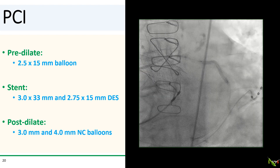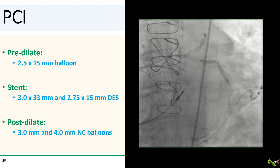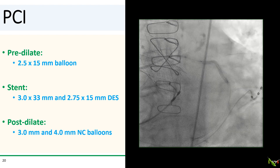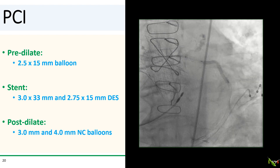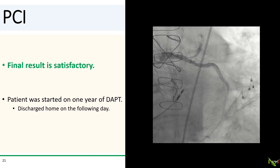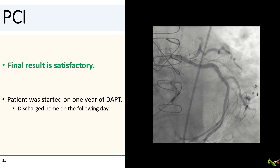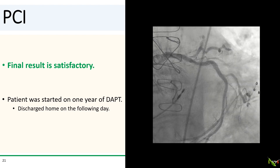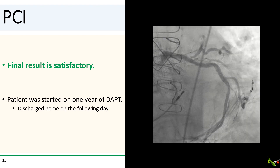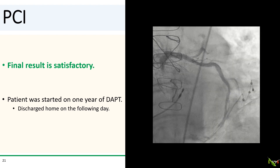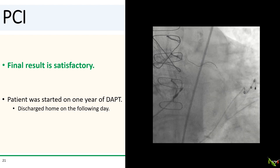We were able to get a 2.5 by 15 mm balloon across the lesion for pre-dilation, and then we stented the circumflex with two overlapping stents and post-dilated with 3.0 and 4.0 mm NC balloons. Here is the final angiographic result, which we thought was quite satisfactory. We started the patient on one year of DAPT and sent him home the following day.